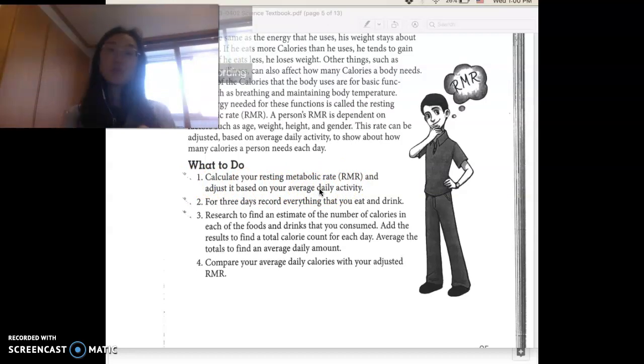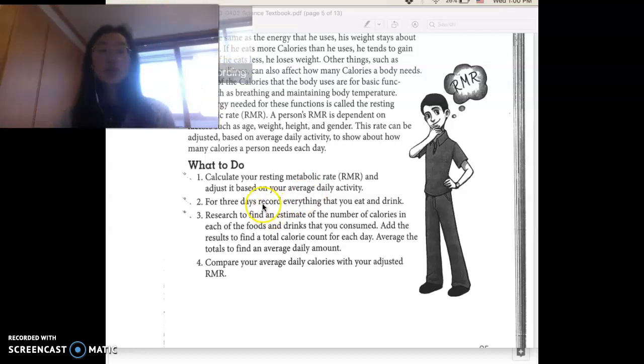So what to do: number one, calculate your resting metabolic rate and adjust it based on your average daily activity. This is what we're gonna be doing today. Number two, for three days record everything that you eat or drink. Might be challenging but you have to do it, you can do it. And number three, research to find an estimate of the number of calories in each of the foods and drinks that you consume. Add the results to find a total calories count for each day and average the totals to find an average daily amount. And then lastly you'll compare your average daily calories with your adjusted RMR.